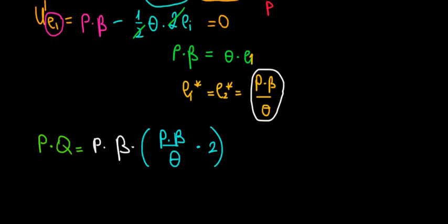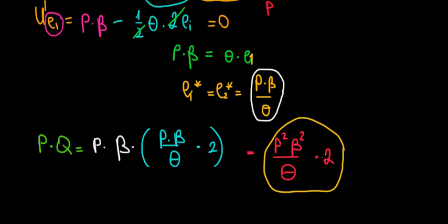Let's open the brackets. We have p times beta times p times beta, which is p squared beta squared divided by theta, multiplied by two. This is the total income they produce as a team. To get the income for one worker, we divide by two, so the income level is p squared times beta squared divided by theta.